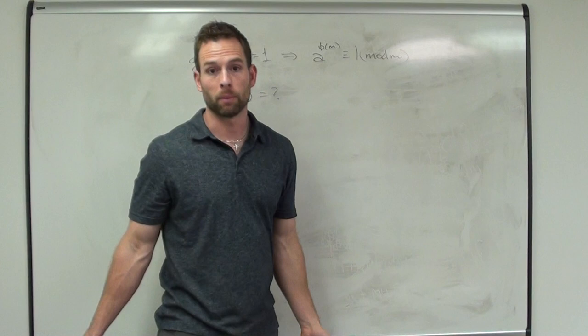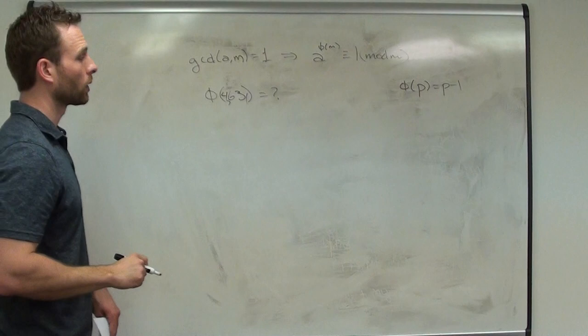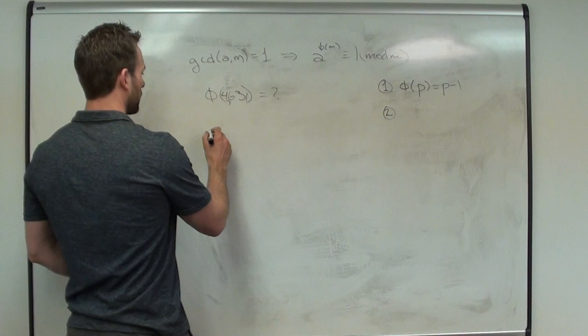What do we know so far? We can do it for a prime — that's one important thing. Number two: what if it's a power of a prime? What if we're doing phi of p to the k? Could we do that?